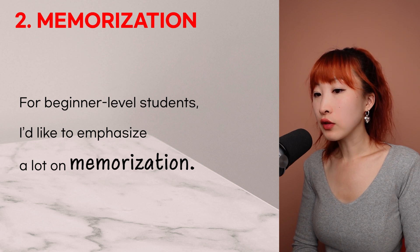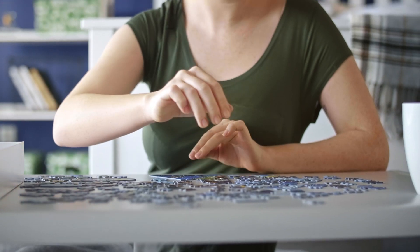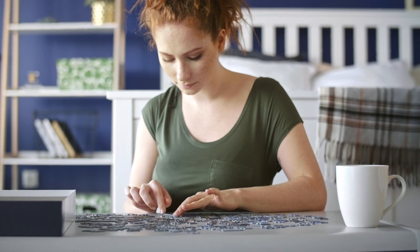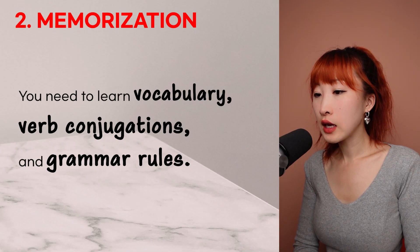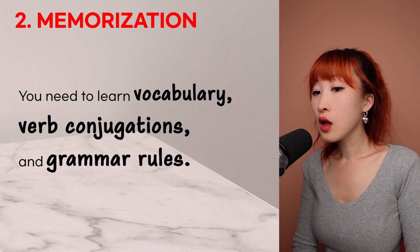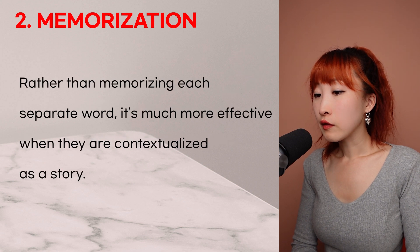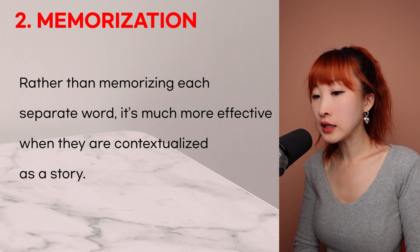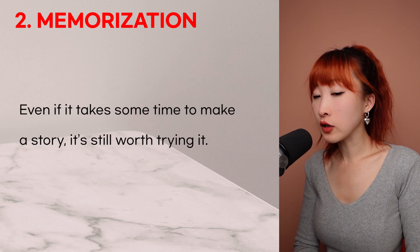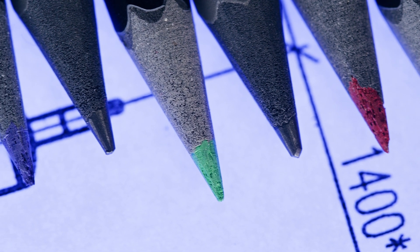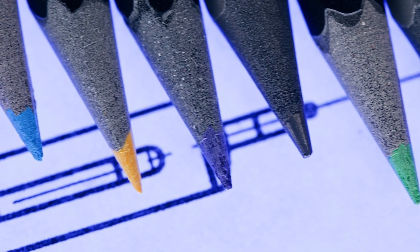For beginner-level students, I would like to emphasize a lot of memorization, because you must stock many pieces of information before playing around with them. You need to learn vocabulary, verb conjugations, and grammar rules. To memorize vocabulary, please refer to my previous video. Rather than memorizing each separate word, it's much more effective when they are contextualized as a story. Even if it takes some time to make a story, it's still worth trying. Color coding can help you visualize sentence structures, including conjugation and grammar rules.